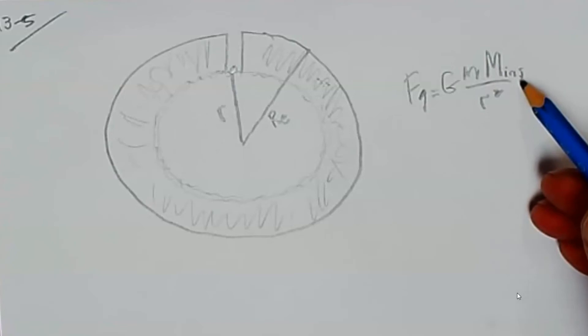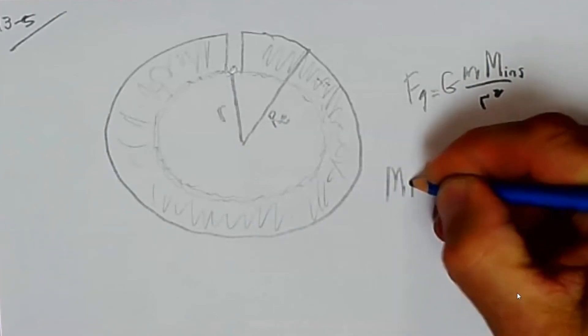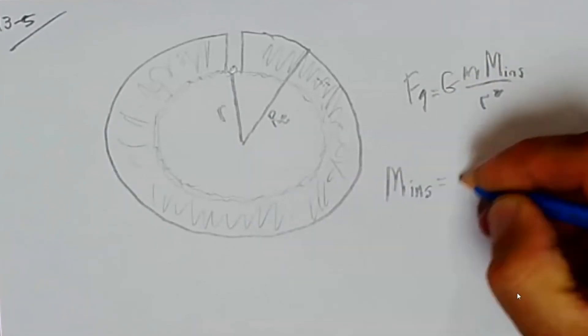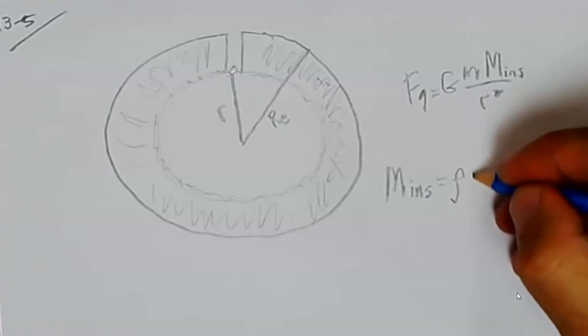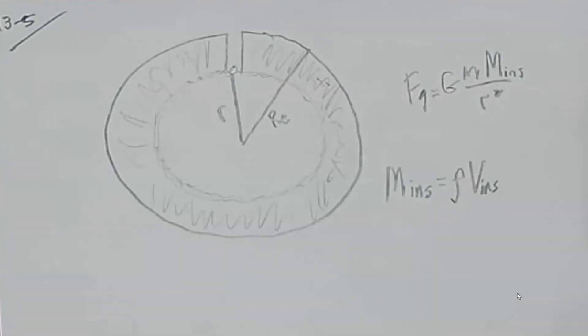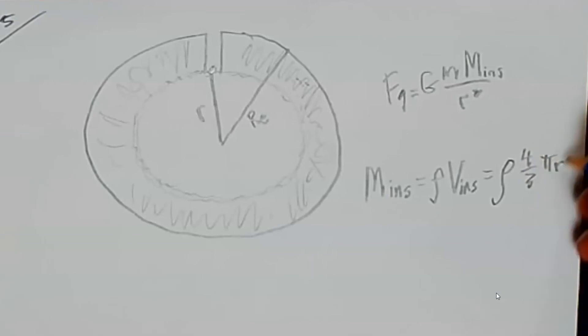So let's get this mass in terms of density and radius little r. I know the mass of what's inside is equal to the density, remember we're assuming constant density, times the volume of that inside piece. And I know that's rho, that's the Greek letter rho, which stands for density. The volume of a sphere, we know, is four-thirds pi r cubed.